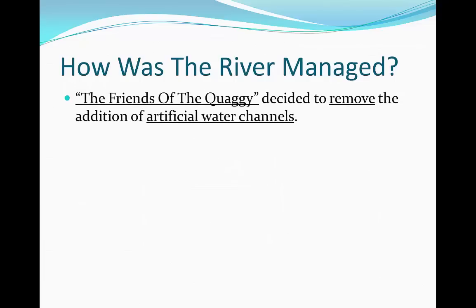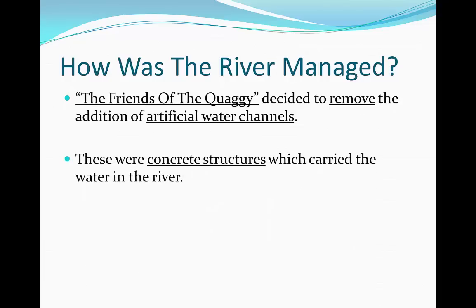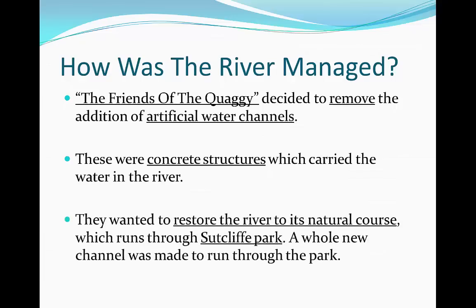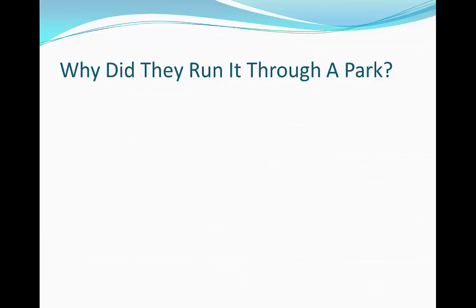What they did to manage it was create a group called the Friends of the Quaggy, and they decided to remove the artificial channels — concrete structures which carried the water in the river. They wanted to restore its natural course, which runs through Sutcliffe Park, and a whole new channel was made for it to run through the park.